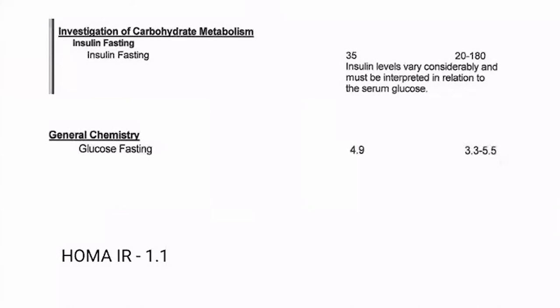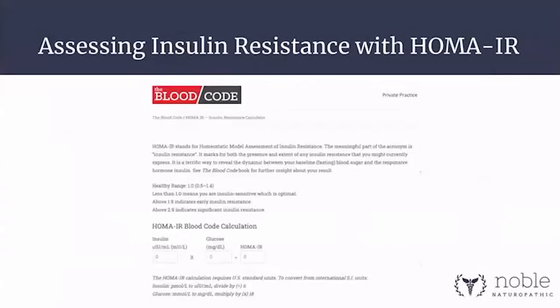You take the insulin fasting — mine was 35 — and the fasting glucose — mine was 4.9 — and you plug it into the calculator. I scored a 1.1. Anything between 1.0 and 1.9 is that middle normal ground; below 1.0 is optimal. I'm happy with my score of 1.1, but anything greater than 1.9 we're working on.